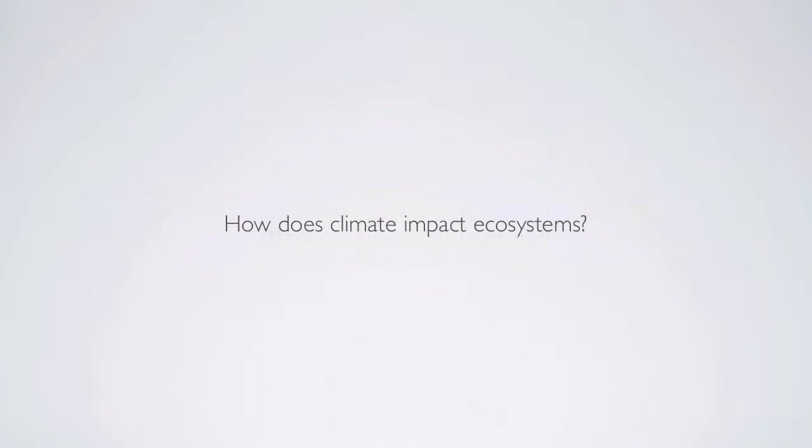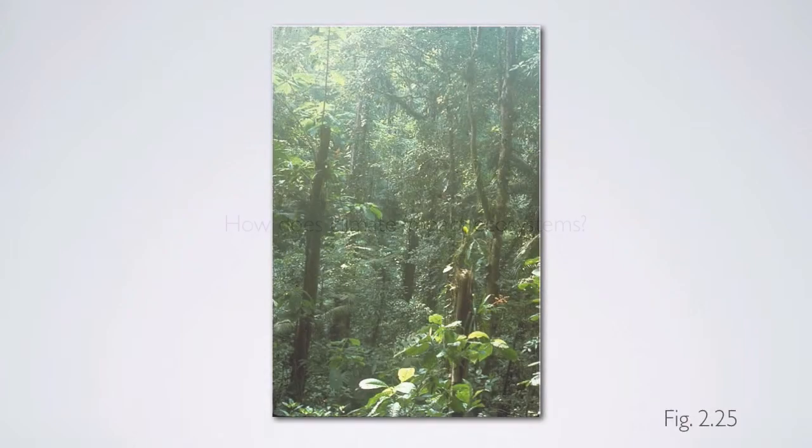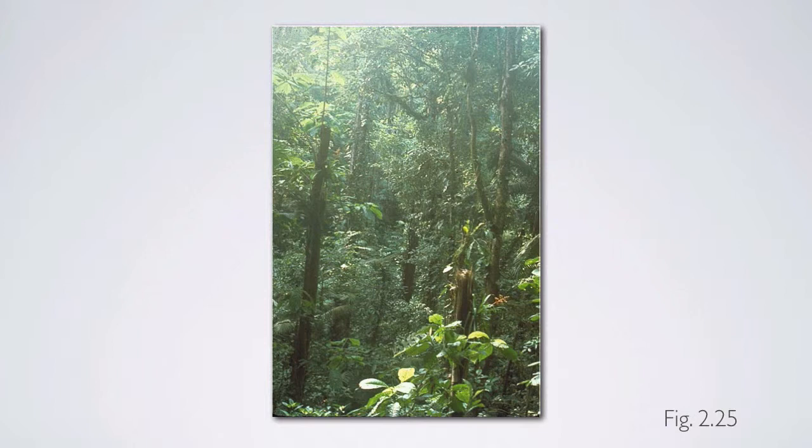The key question here, though, is how does climate impact ecosystems? If you were to take a trip around the world and take a look at the different ecosystems, you'd start to ask questions about what was causing the differences in the ecosystems that you saw. This is essentially what biogeographers had done well over 100 years ago. And one of the things that they started to notice is that there were predictable patterns in the types of ecosystems that you saw in different climatic regimes.